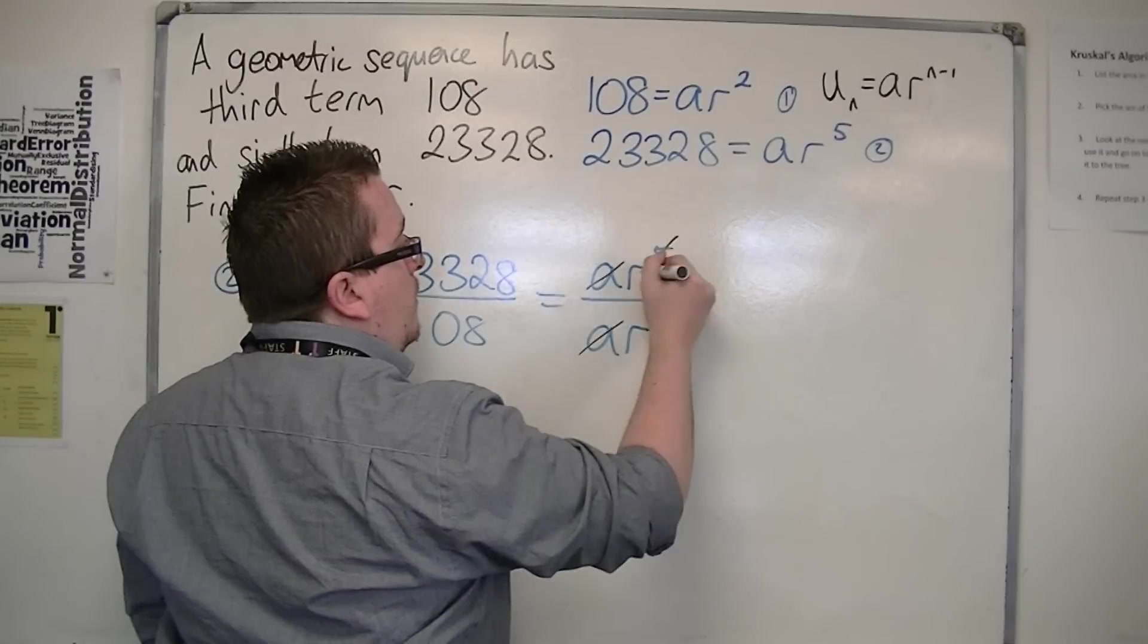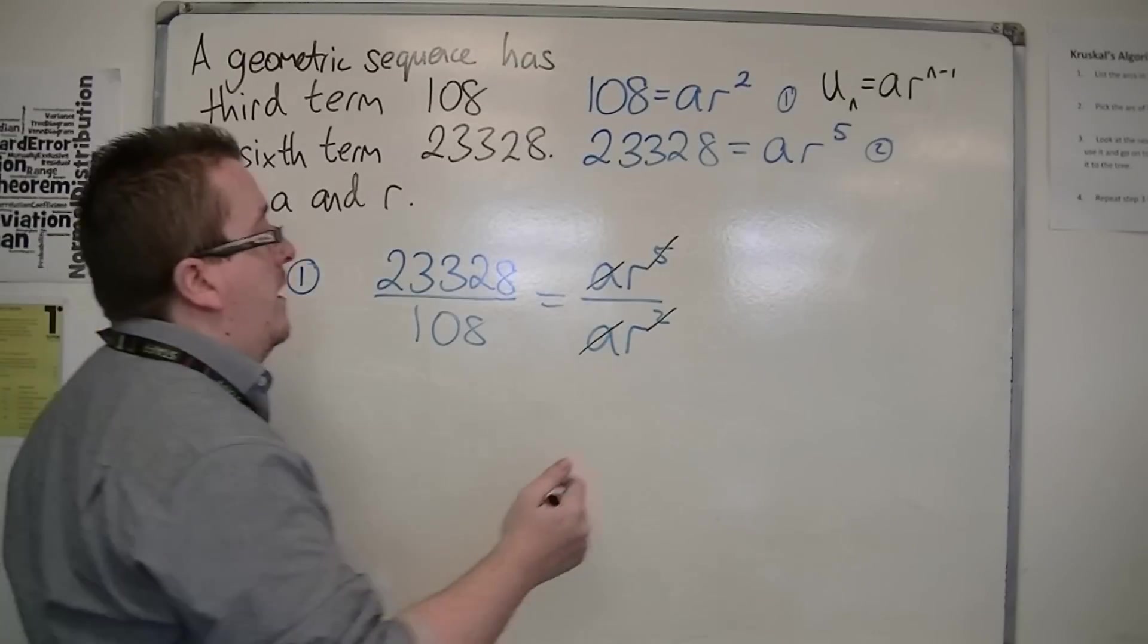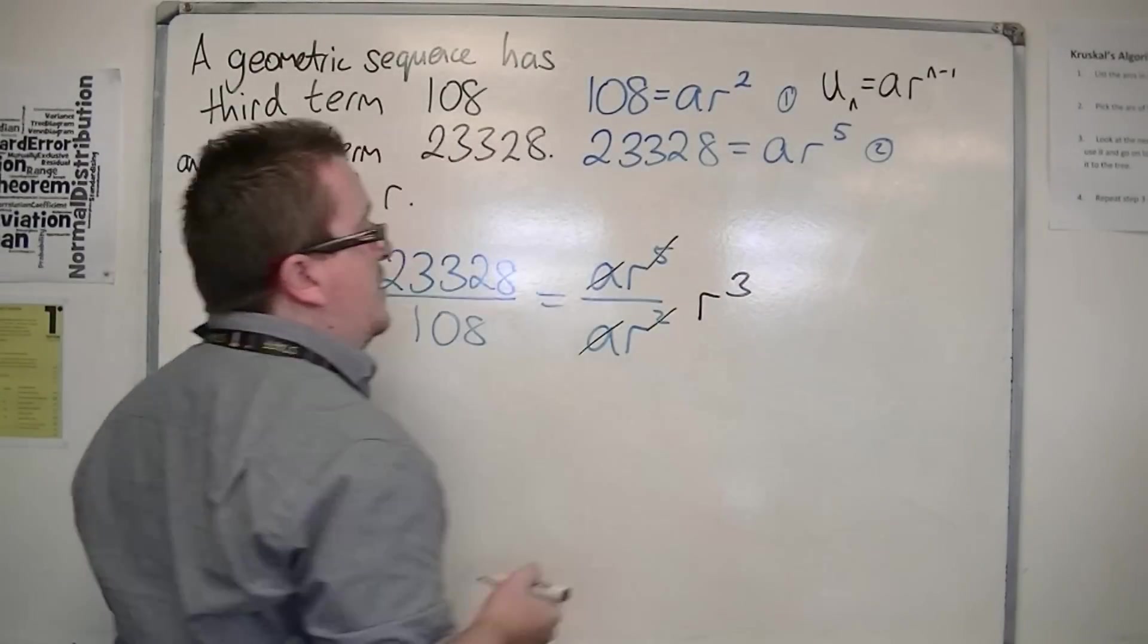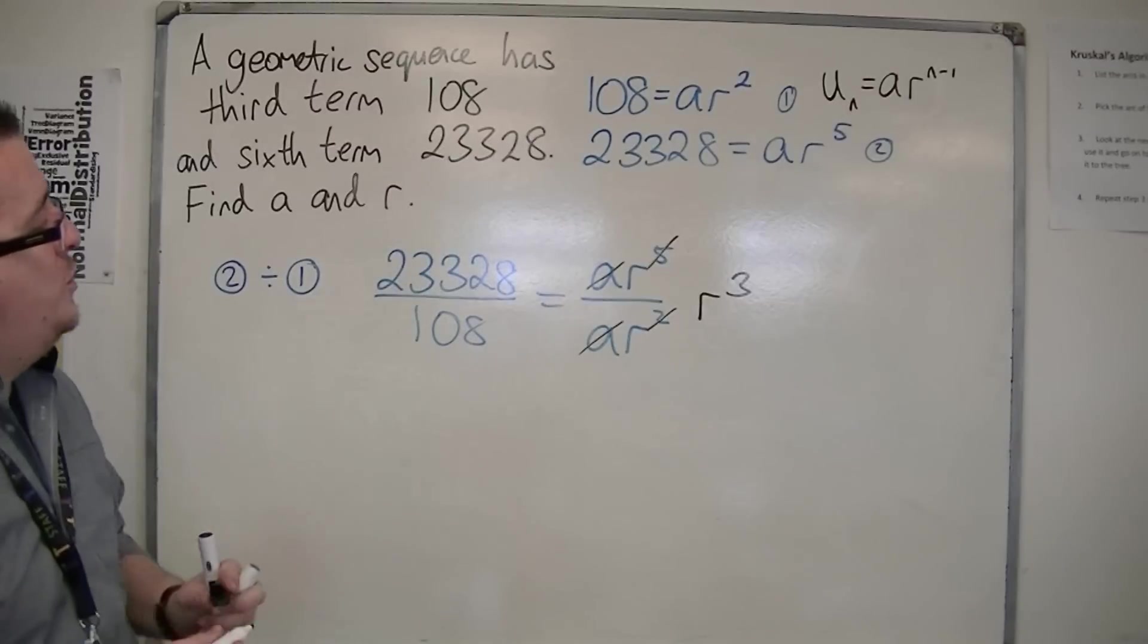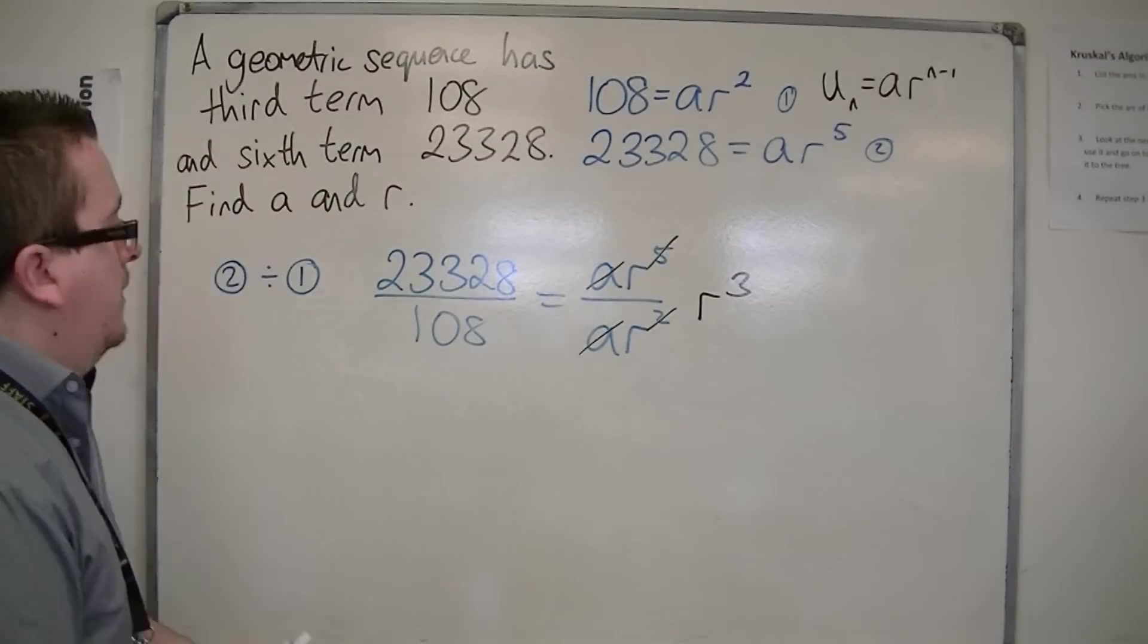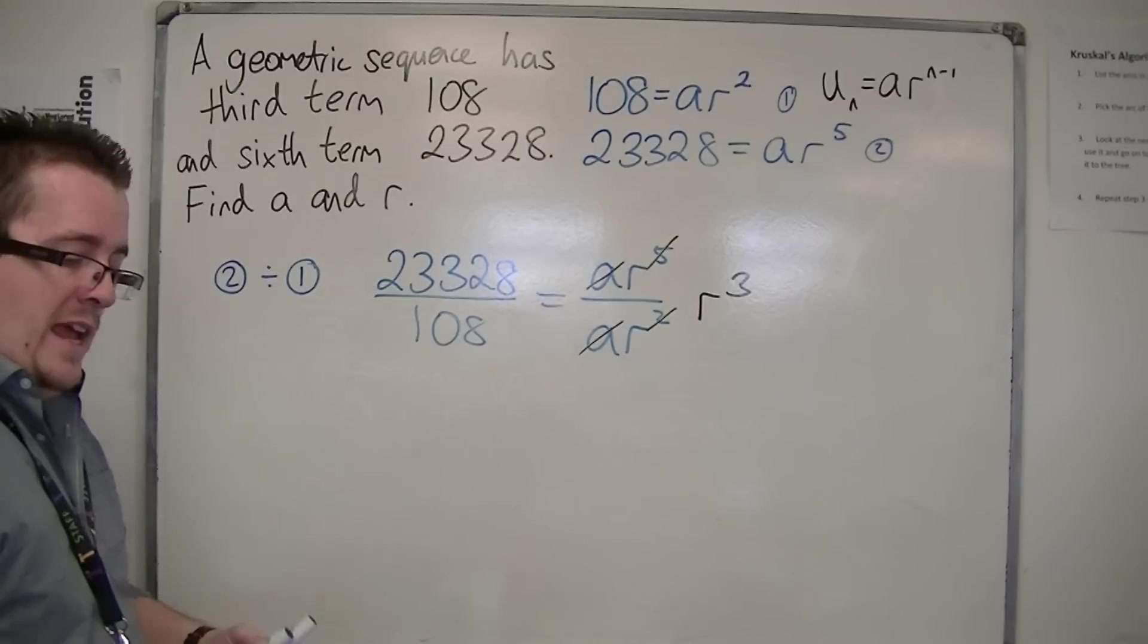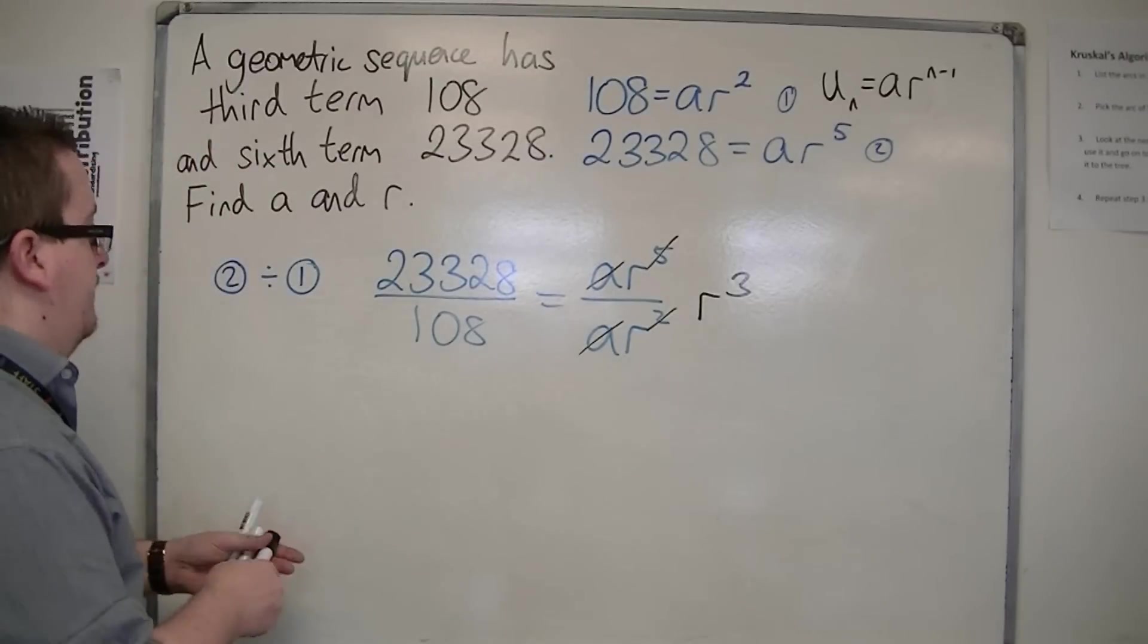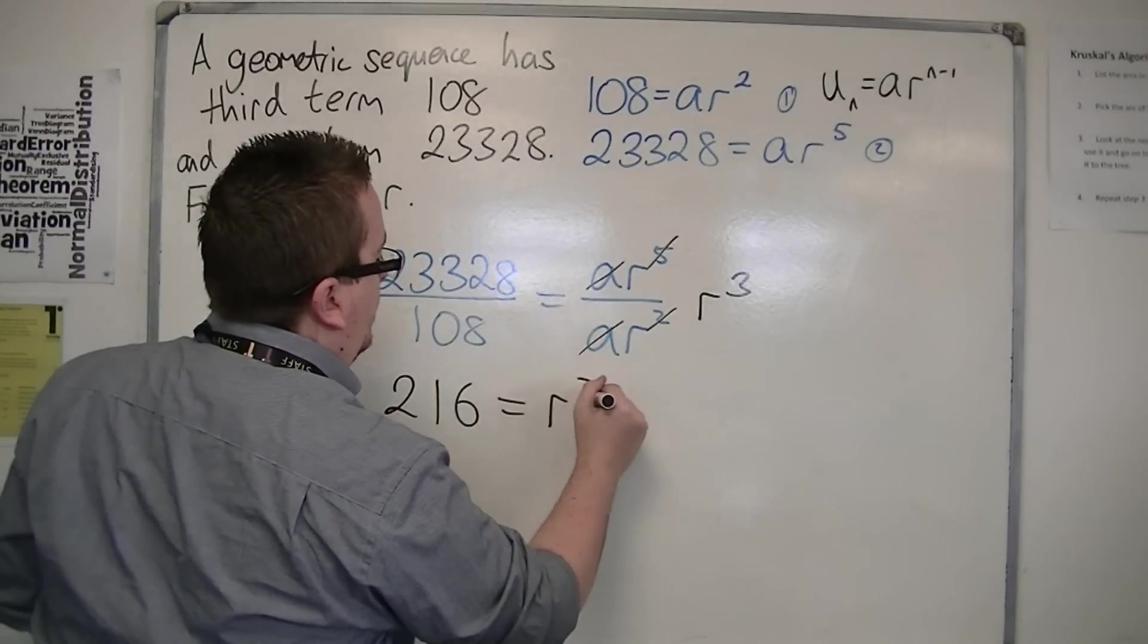OK, so the R^5 and the R^2 cancel out to make R^3. I've also got this 23,328 divided by 108. Let's simplify that on the calculator and we get 216. So that means 216 = R^3.